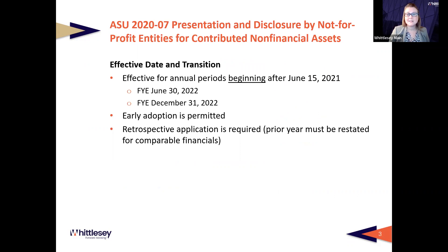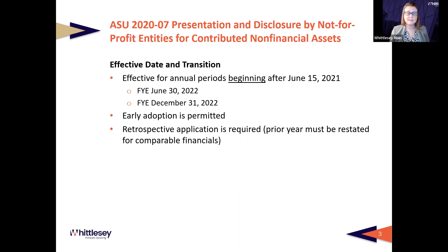The ASU is effective for annual periods beginning after June 15th, 2021. If you were a June 30th fiscal year-end, you should have already implemented the standard for 2022. If you are a calendar year December year-end, then you should be implementing it right now in your current financial statements for FY22. You do need to implement now if you haven't already, and retrospective application is required. When you issue your FY22 financials with comparative statements, you need to restate your FY21 column to reflect this new ASU.